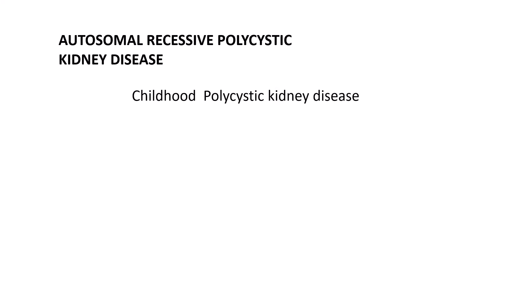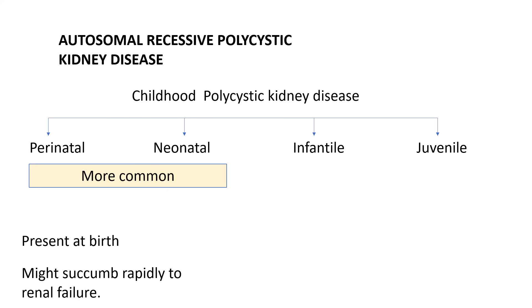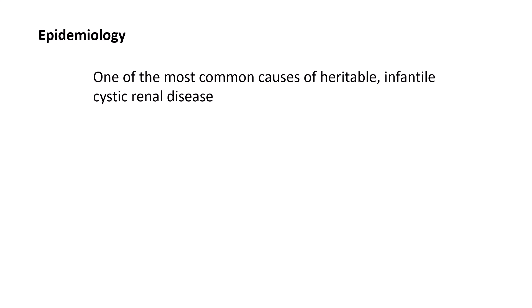Autosomal recessive polycystic kidney disease, also referred to as childhood polycystic kidney disease, is a hereditary disorder just like autosomal dominant polycystic kidney disease. They are categorized into perinatal, neonatal, infantile, and juvenile forms based on the onset of disease manifestations in children. The perinatal and neonatal forms are more common, often present at birth, and most patients succumb to death due to renal failure. The incidence is around 1 in 20,000 to 40,000 live births.